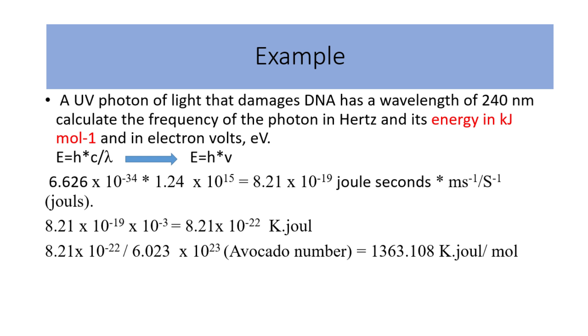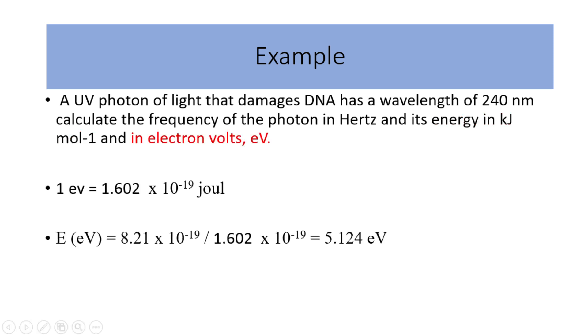To calculate the energy in electron volts units, we know that 1 electron volt equals 1.602 times 10 to the power of negative 19 joules. So, we divide the energy value in joules by 1.602 times 10 to the power of negative 19 joules. The result is 5.124 electron volts. This was everything for this video.